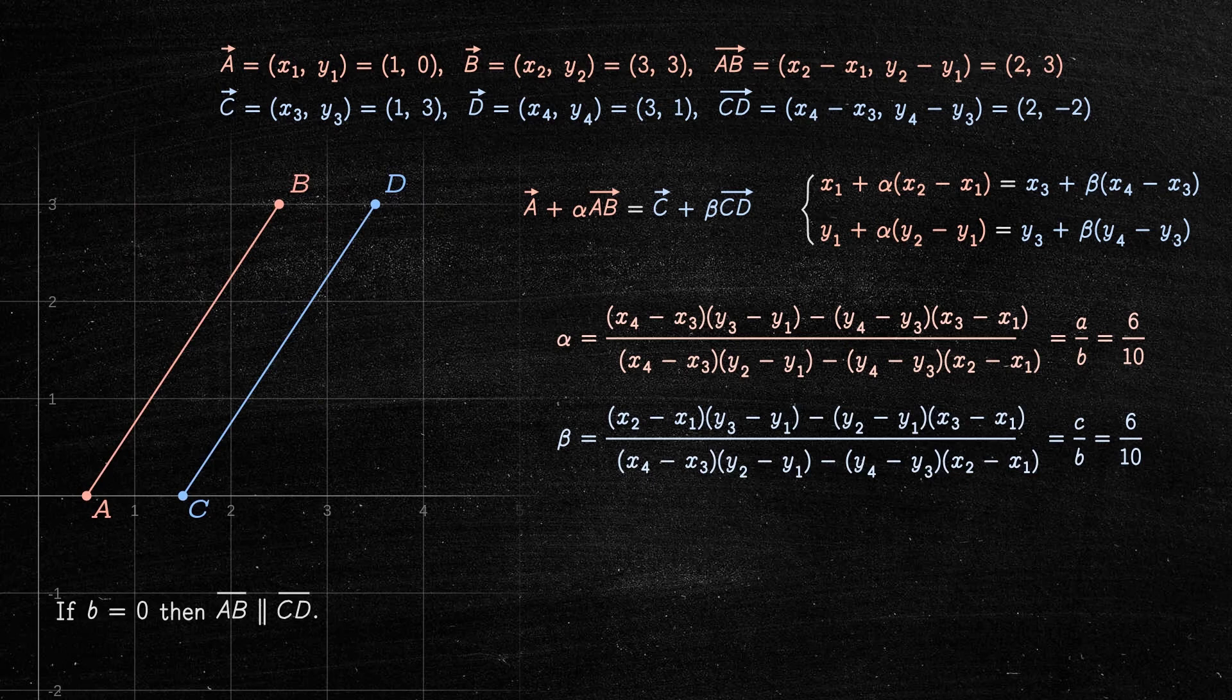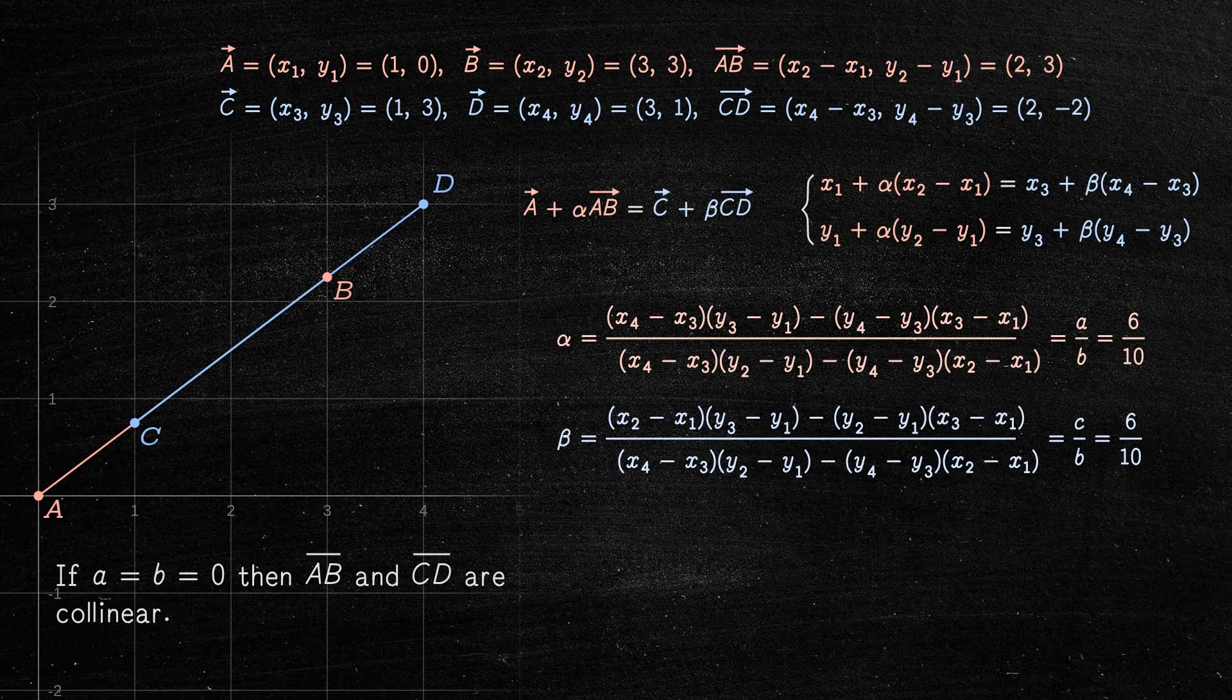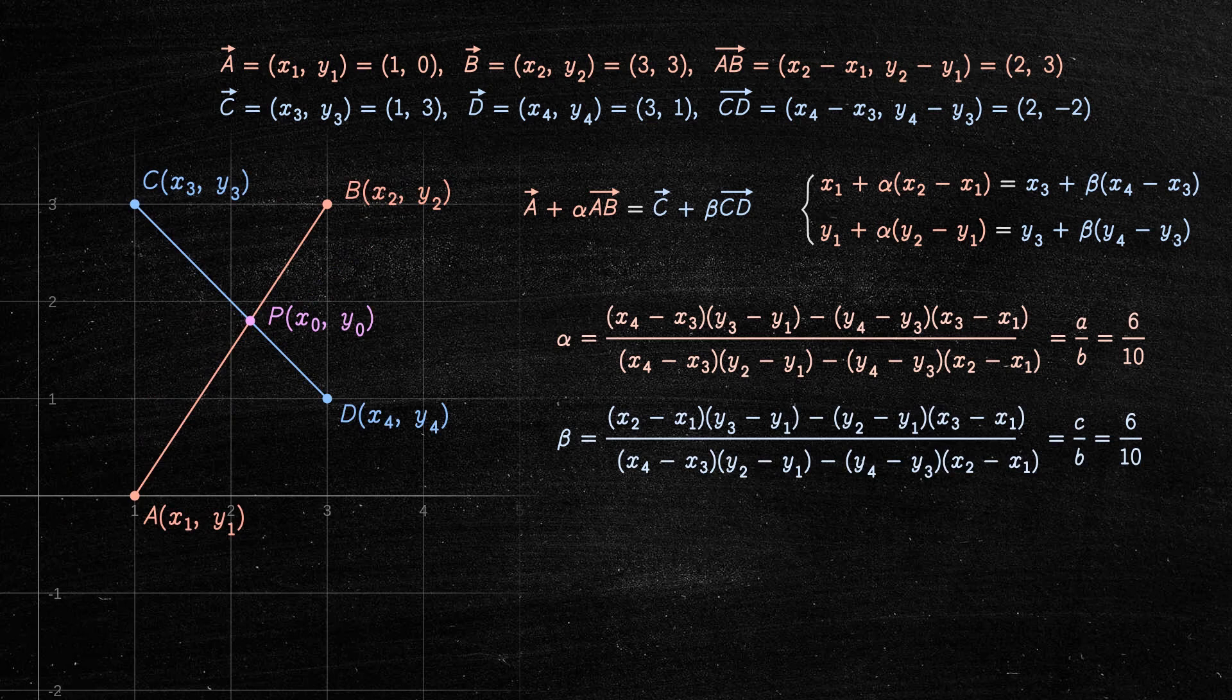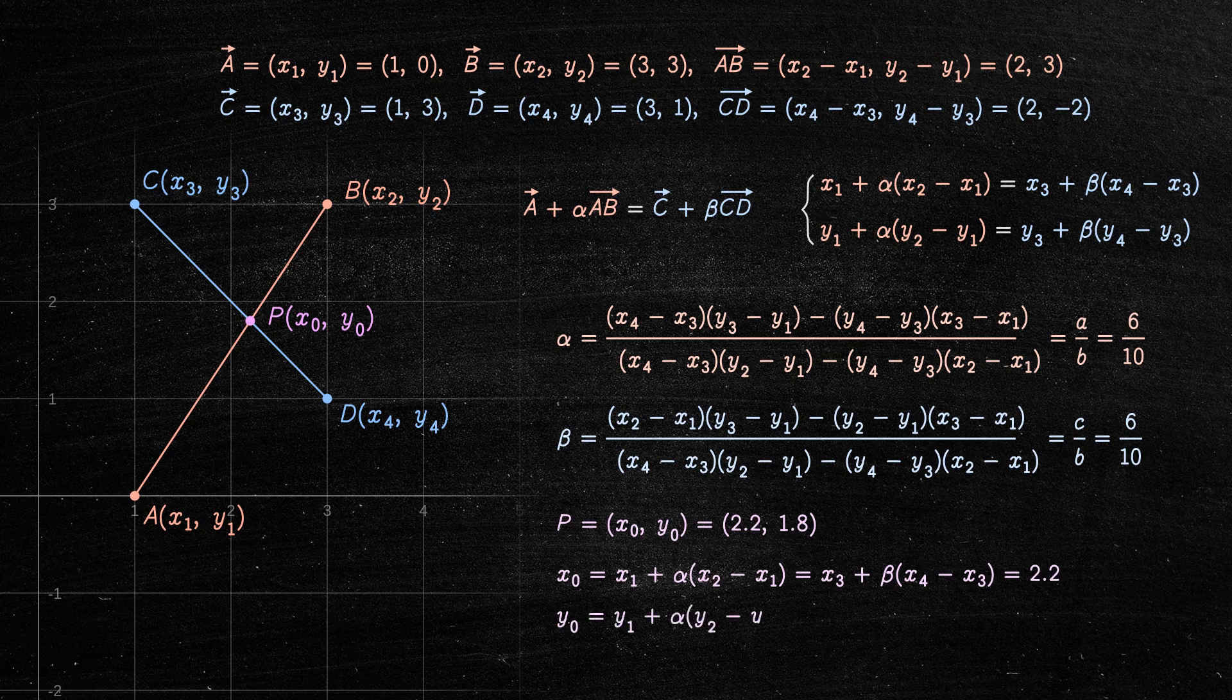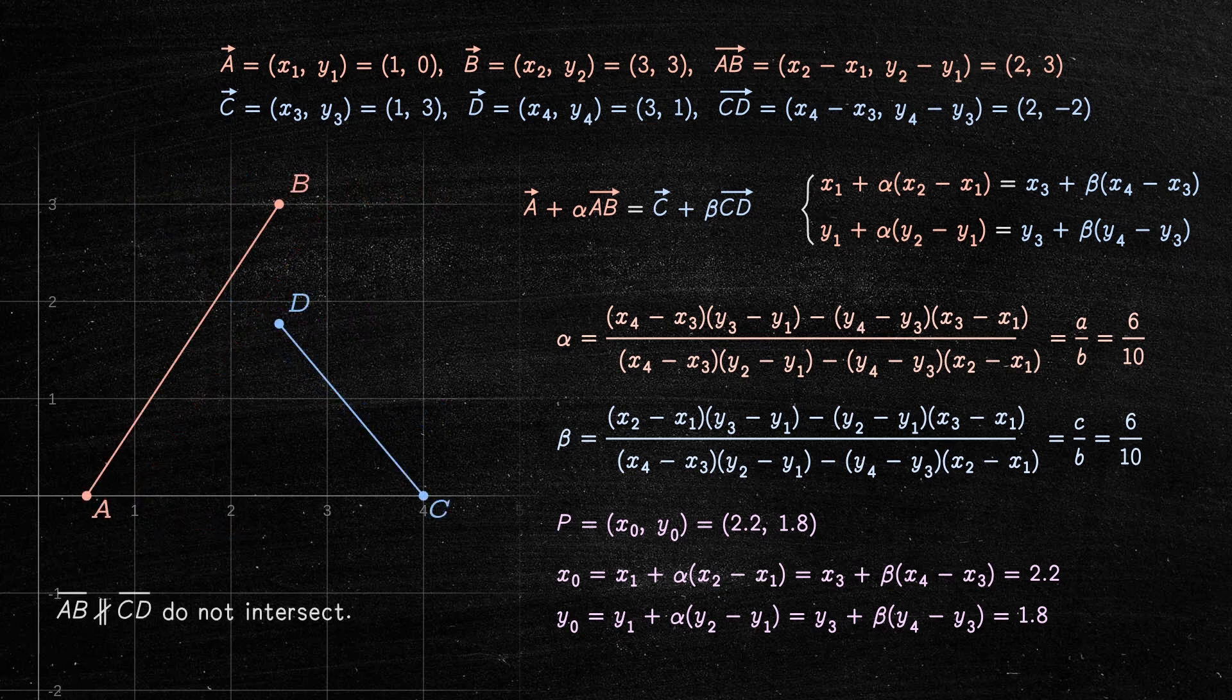If the denominator B is 0, then the two line segments are parallel and non-intersecting. If the numerator A and the denominator B are 0, then the two line segments are collinear. If alpha and beta are values between 0 and 1, the two line segments meet at this point. Otherwise, the two line segments are not parallel but do not intersect.